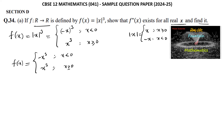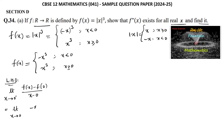Now the left-hand derivative: limit as x tends to 0⁻ of [f(x) - f(0)] / (x - 0). Since x < 0, f(x) = -x³ and f(0) = 0, so this becomes limit of (-x³) / x = -x², and as x tends to 0, this equals 0.